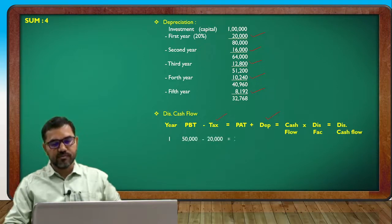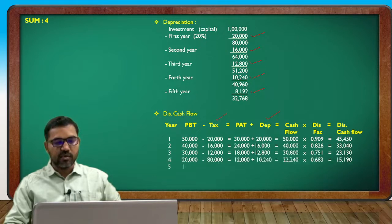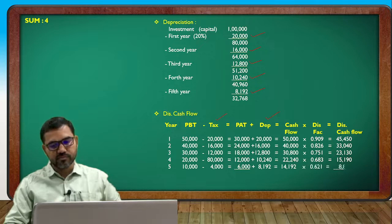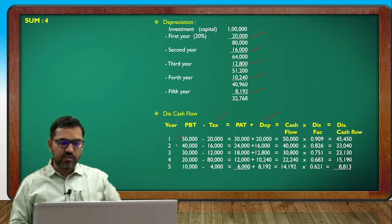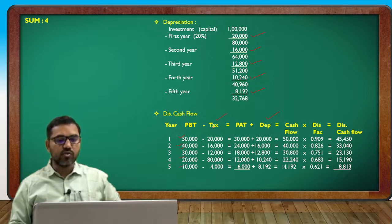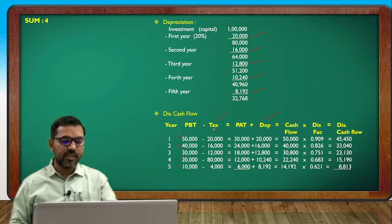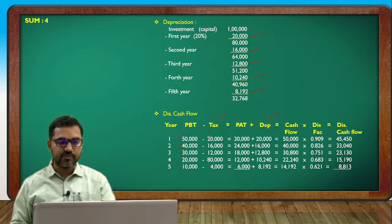If you understand this, the profit figures are: 50,000; 40,000; 30,000; 20,000; and 10,000. The rate of tax is 40%, so the tax amounts are: 20,000 and 16,000 respectively.